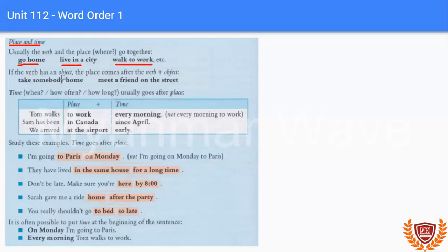Verb is an object, then the place. Take somebody home. Meet a friend on the street. Okay, now, our place before is our time. Time the body is our place in an object.